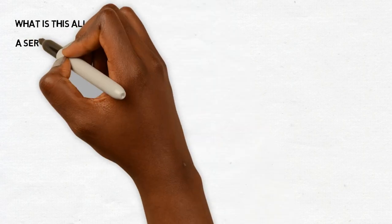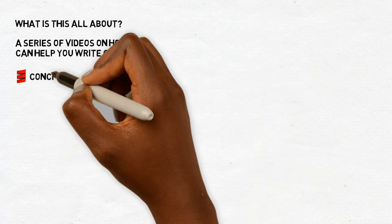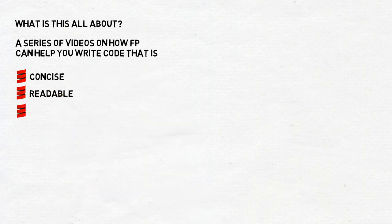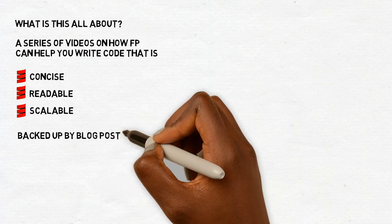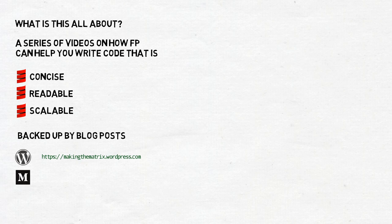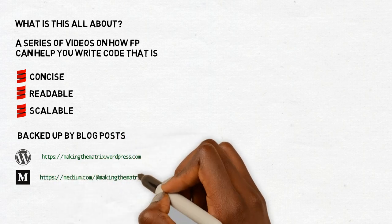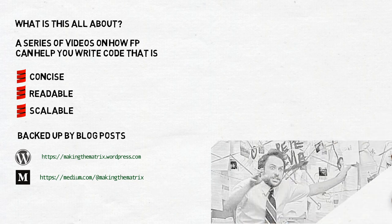This is going to be a series of YouTube videos about how functional programming can help you write code that is concise, and yet readable, and yet again scalable, meaning that if your project grows significantly, you will still be able to use the same code after some refactoring. The videos will be backed up by blog posts on my WordPress and copied to Medium. I admit it's going to be a bit tricky to keep this format from falling apart, as not every piece of information can be presented as well in a blog post and in a video. I will probably make small changes to the blog posts long after they are published to make them match the videos, which are harder to edit.